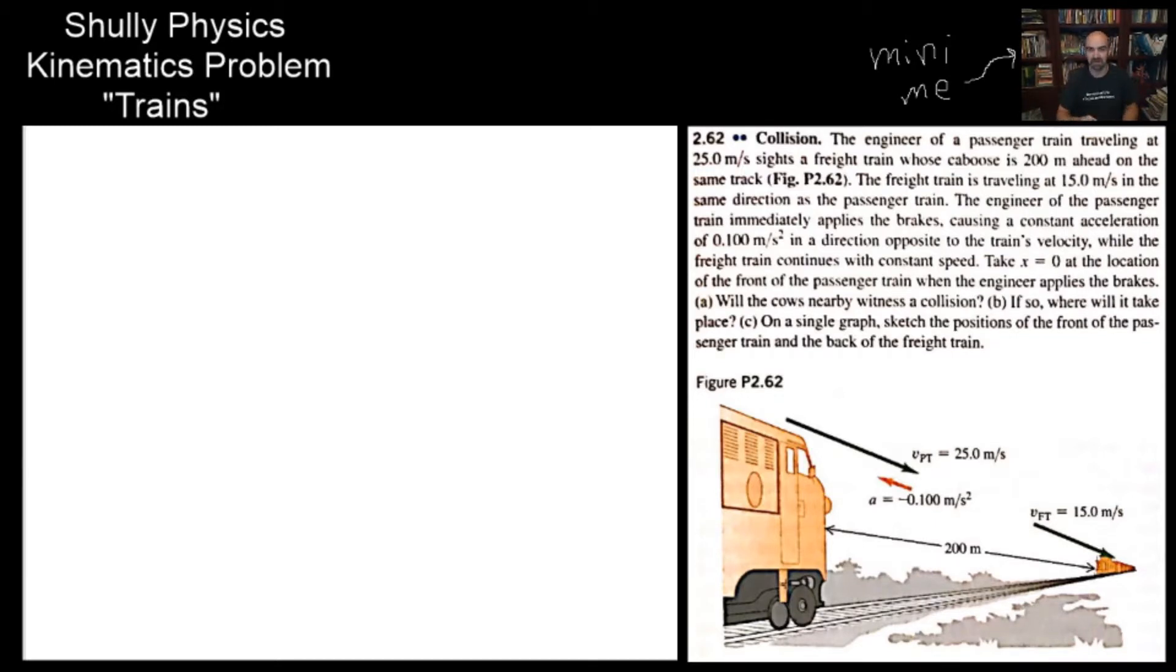This particular one is out of the Young and Friedman 11th edition of University Physics. So thank you, Young and Friedman and publishers. Will the cows nearby witness a collision? What a weird question. But what it's asking is, is the front of this train going to hit the back of the other train?